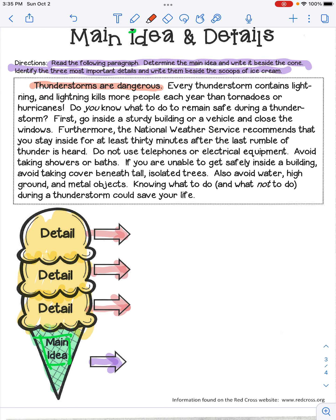Thunderstorms are dangerous. Every thunderstorm contains lightning, and lightning kills more people each year than tornadoes or hurricanes. Do you know what to do to remain safe during a thunderstorm? First, go inside a sturdy building or a vehicle and close the windows. Furthermore, the National Weather Service recommends that you stay inside for at least 30 minutes after the last rumble of thunder is heard.